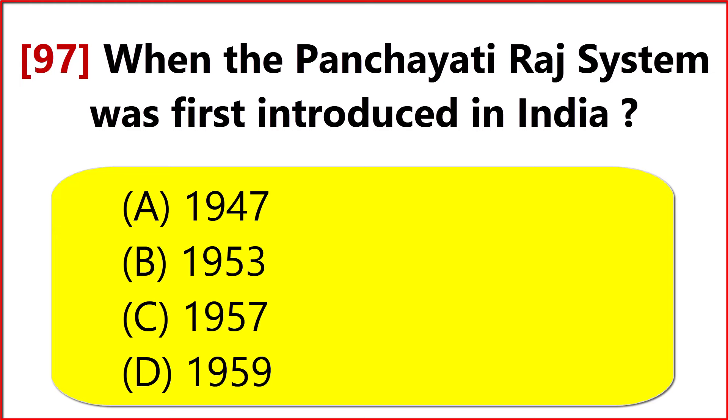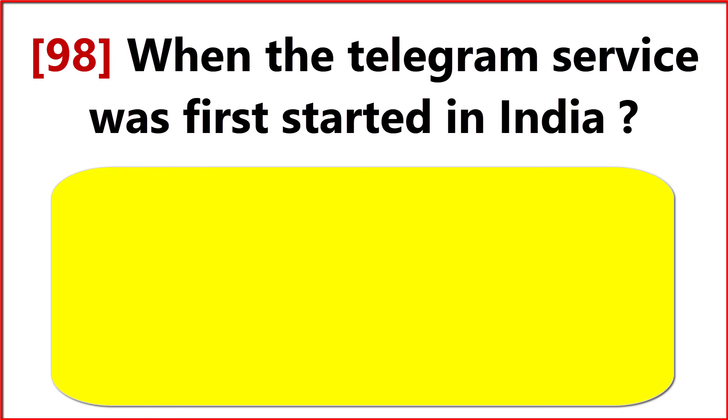When was the Panchayati Raj system first introduced in India? Option D: 1959.